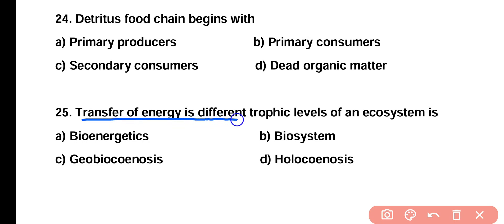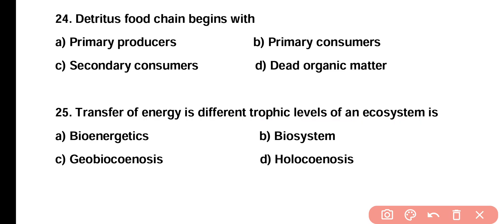Question number twenty-five: transfer of energy at different trophic levels of an ecosystem is termed as bioenergetics, biosystem, geobiokinosis, or holokinosis? Correct answer is option A. Transfer of energy at different trophic levels of an ecosystem is known as energy flow or bioenergetics.